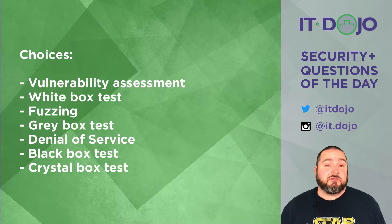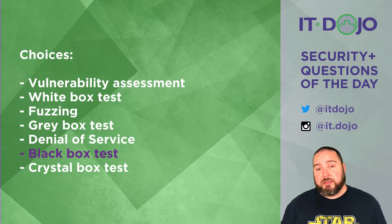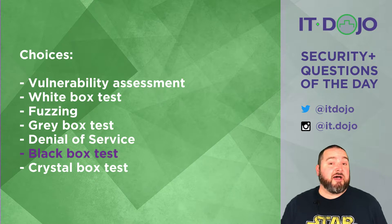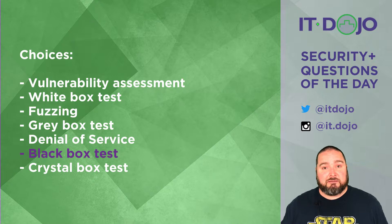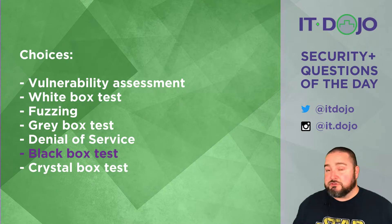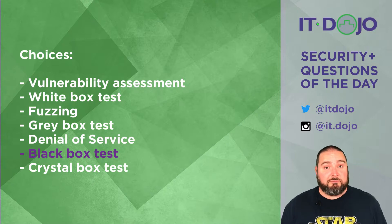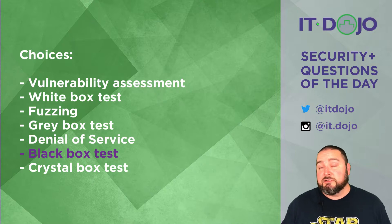The answer you're actually looking for is that you're doing a black box penetration test. A black box penetration test is when you are given basically no information other than what your target is, and the scope and boundary of just how far you're allowed to go is defined up front — but you're not given anything about the structure of the network or any additional details. The very last option is a crystal box test, which is another name for white box testing. Black box test is what you're looking for.